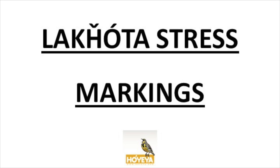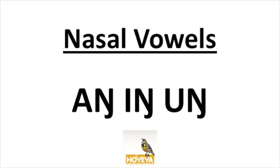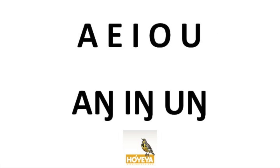First we have five oral vowels. In addition to these five oral vowels, we have three nasal vowels. These are pronounced through the nose, hence why we call them nasal vowels. In total, we have eight vowels found in the Lakota language.